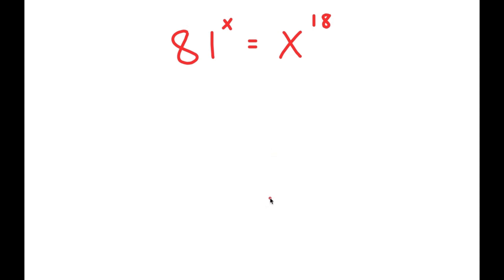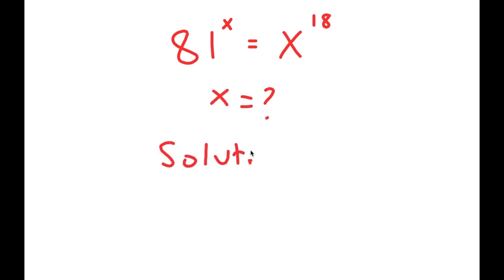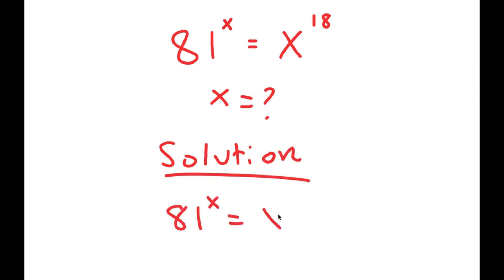In this problem, I have 81 to the power of x is equal to x to the power of 18. I want to find the value of x here. For my solution, I'm going to rewrite this equation: 81 to the power of x is equal to x to the power of 18.